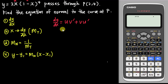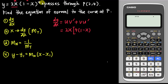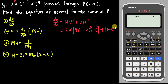So u is 2x. To differentiate v, I move the 4 to the front, getting (1 minus x) to the power 3, then multiply by the derivative of the inside bracket which is negative 1. Then plus v, which is (1 minus x) to the power 4, times the derivative of u, which is just 2.